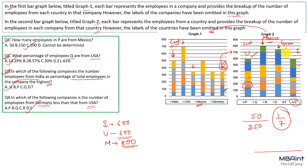That is all. We did not make our calculation complicated. We just traced information from Graph 2 to Graph 1 and again from Graph 1 to Graph 2, and accordingly we solved it. Hope you have understood it. Thank you.